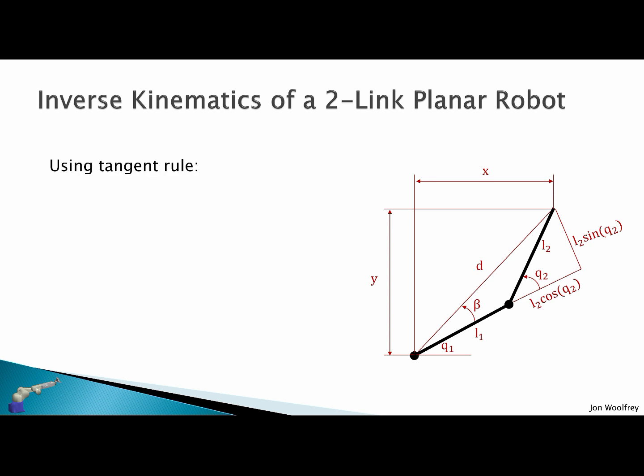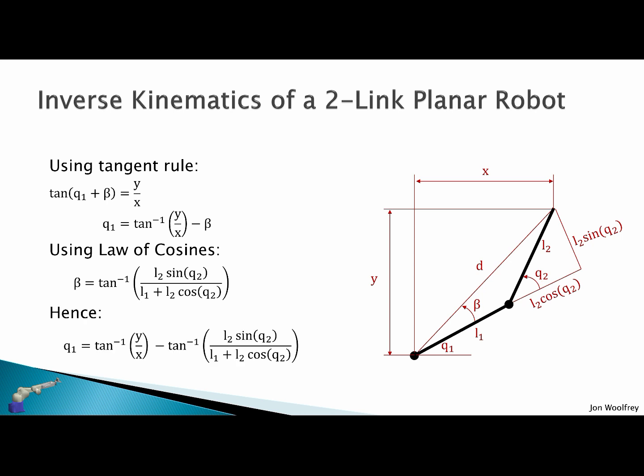Now to solve for Q1 we can use the tangent rule. That is, tan of Q1 plus beta must equal y over x. Solving for Q1 we get this, and now we just need to solve for beta. Using the law of cosines we can see that beta will be the inverse tangent of L2 sine Q2 over L1 plus L2 cos Q2. And hence Q1 is inverse tan of y on x minus inverse tan of this expression here.